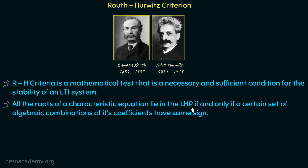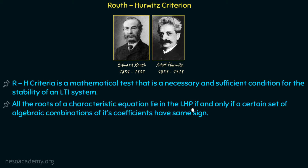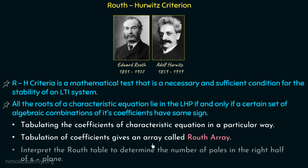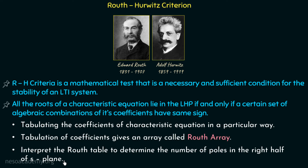The RH criteria is a mathematical test that is a necessary and sufficient condition for the stability of an LTI system. It states that all the roots of the characteristic equation lie in the left half plane — meaning the system is stable — if and only if a certain set of algebraic combinations of its coefficients have the same sign. This involves tabulating the coefficients of the characteristic equation to form the Routh array, which is then interpreted to determine the number of poles in the right half of the S-plane.